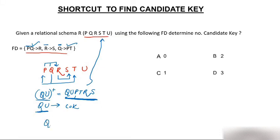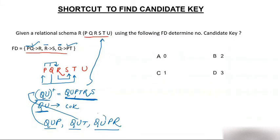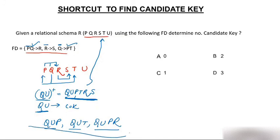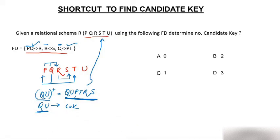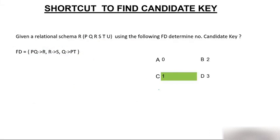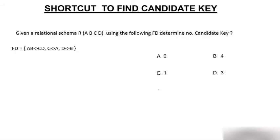Is QU the only candidate key? Yes — any addition to QU like QUP, QUT, or QUPR would be a superset. Since QU is already a candidate key (a proper subset of all these), they can only be super keys, not candidate keys. So we have only one candidate key: QU. The correct answer is 1.